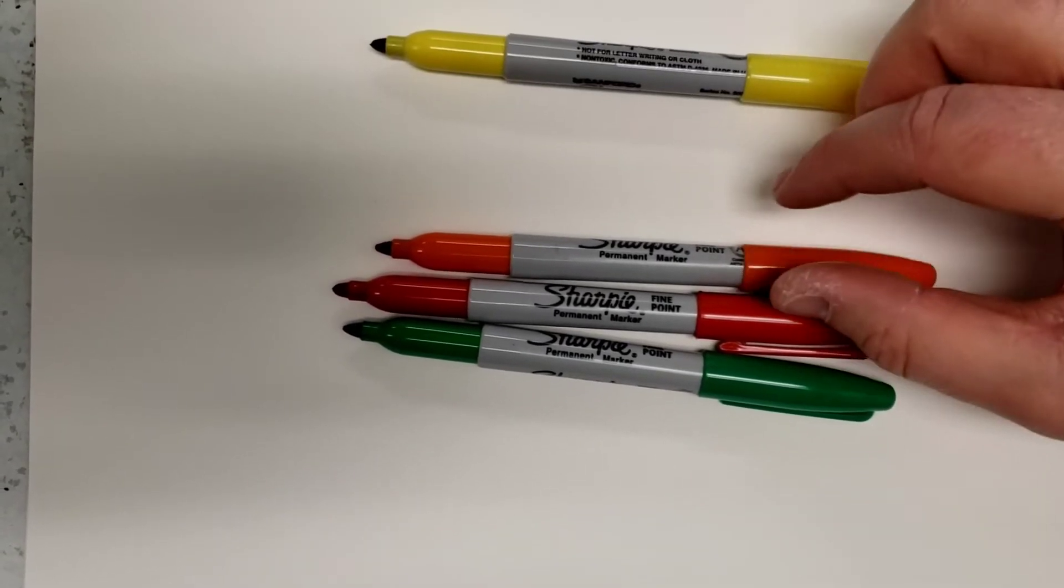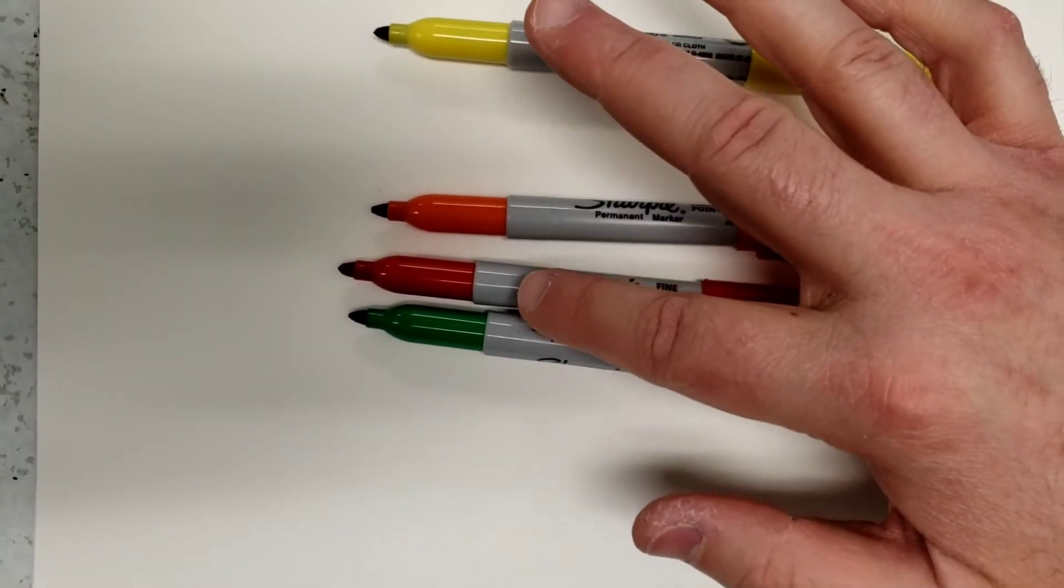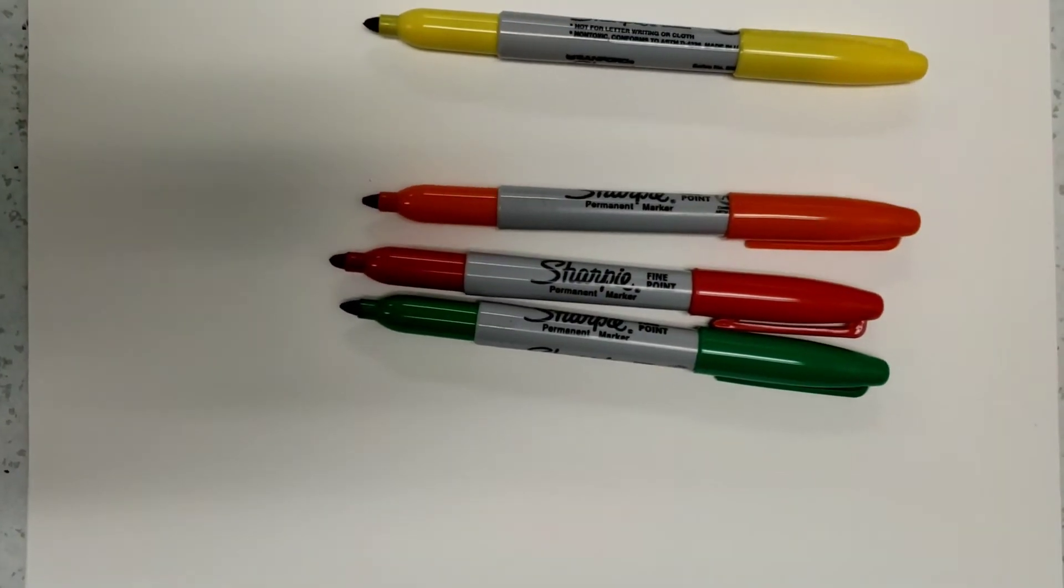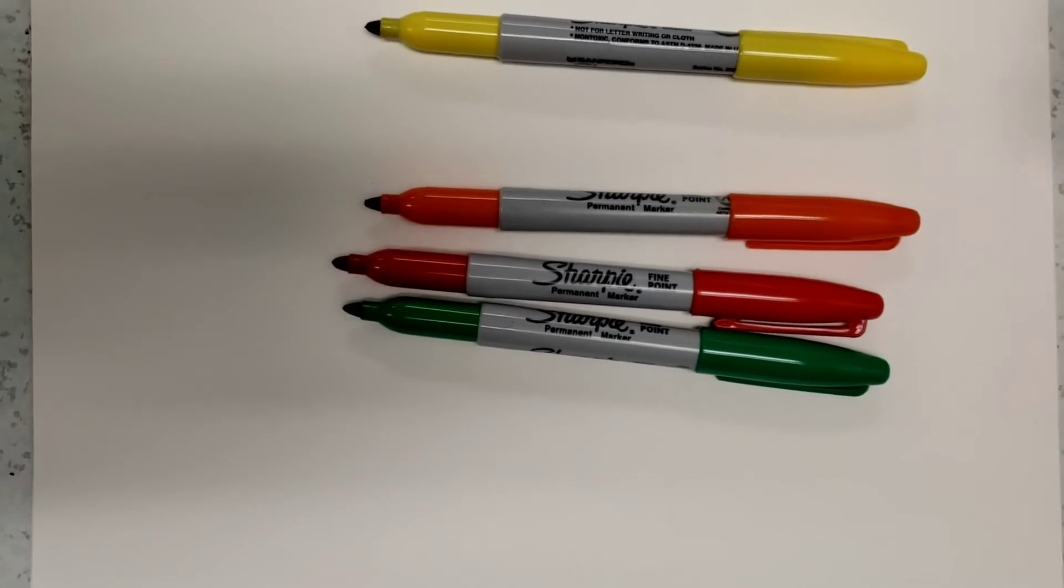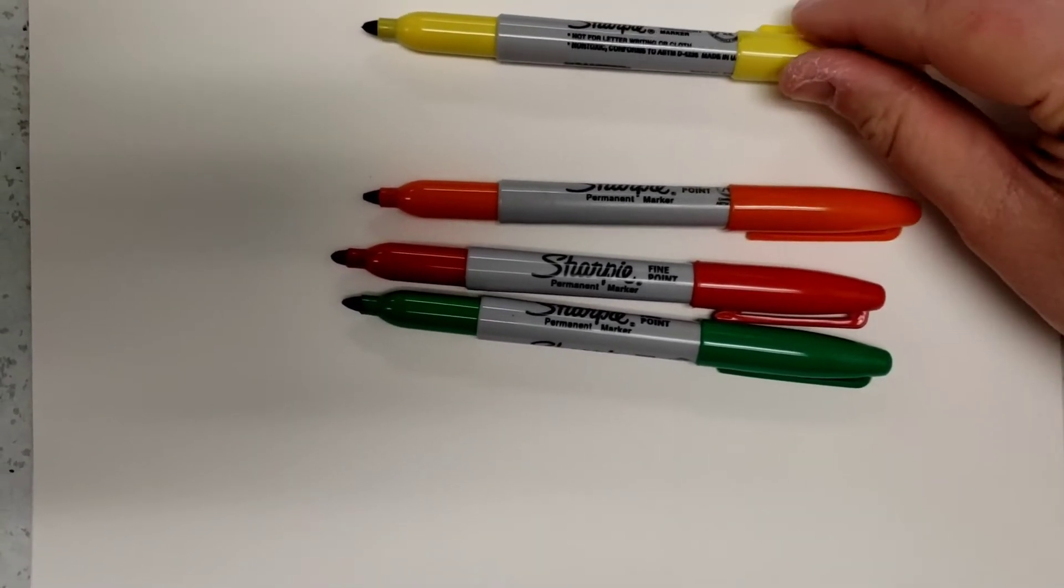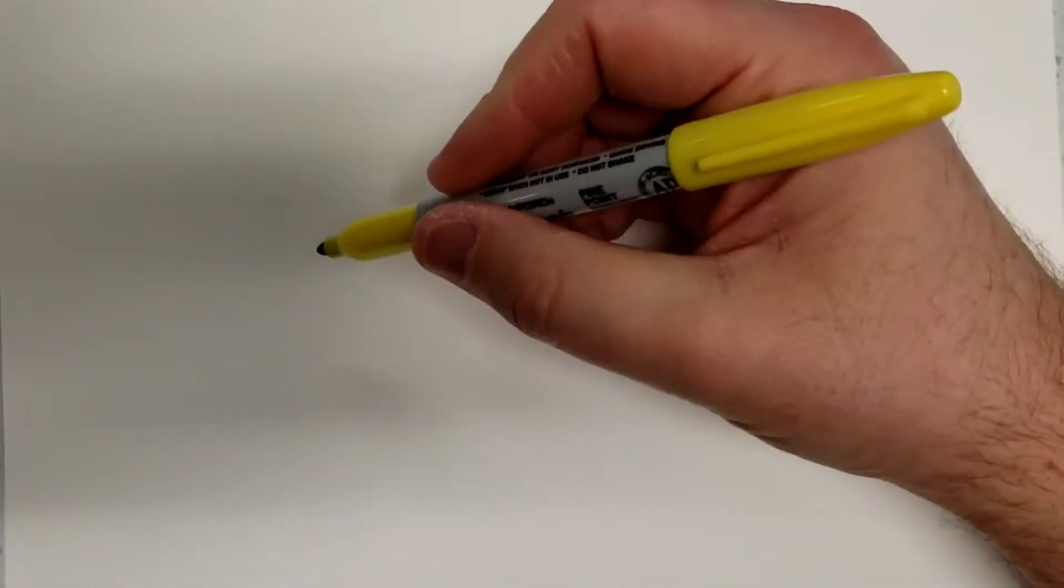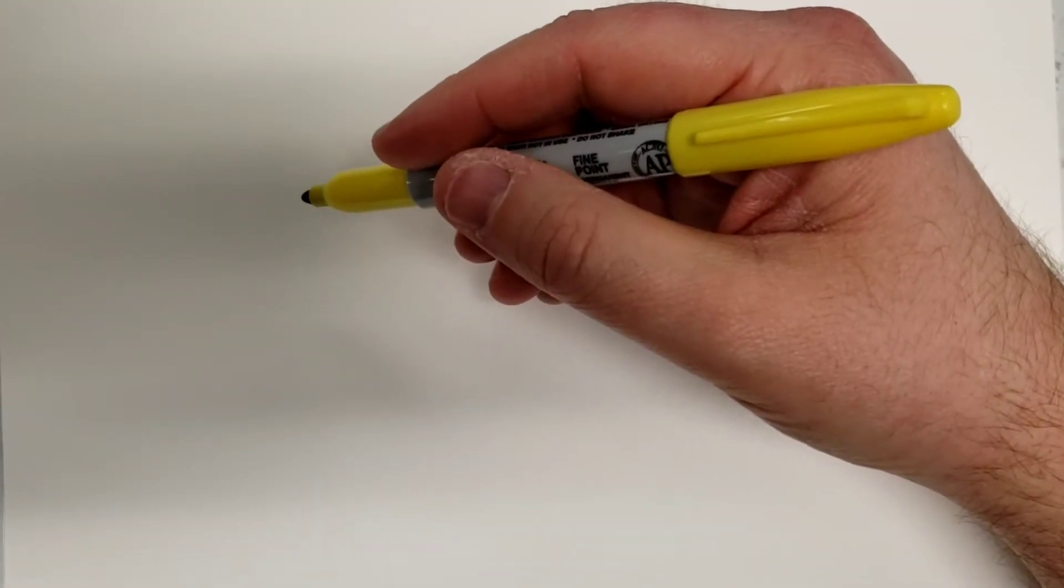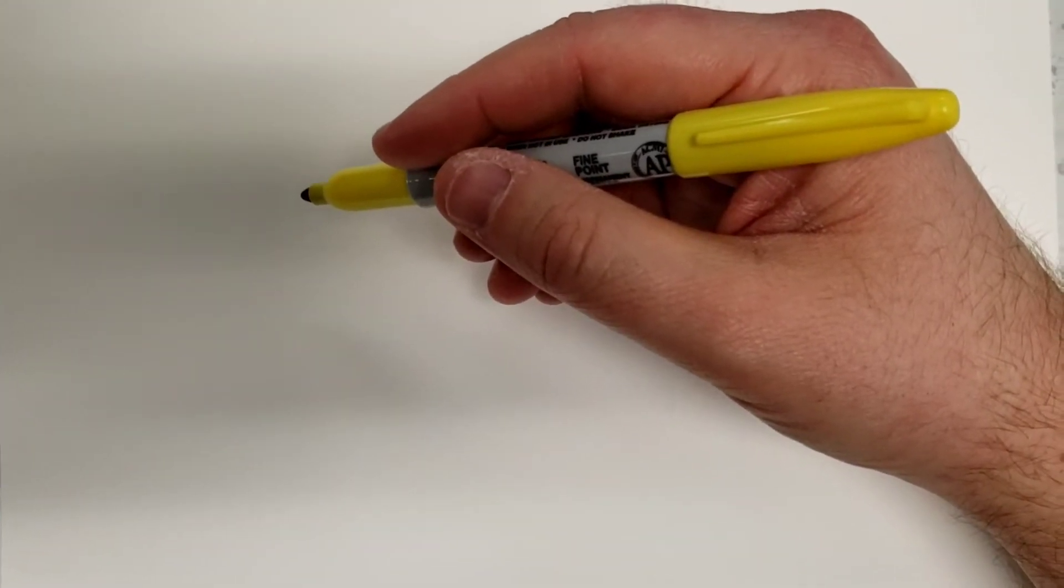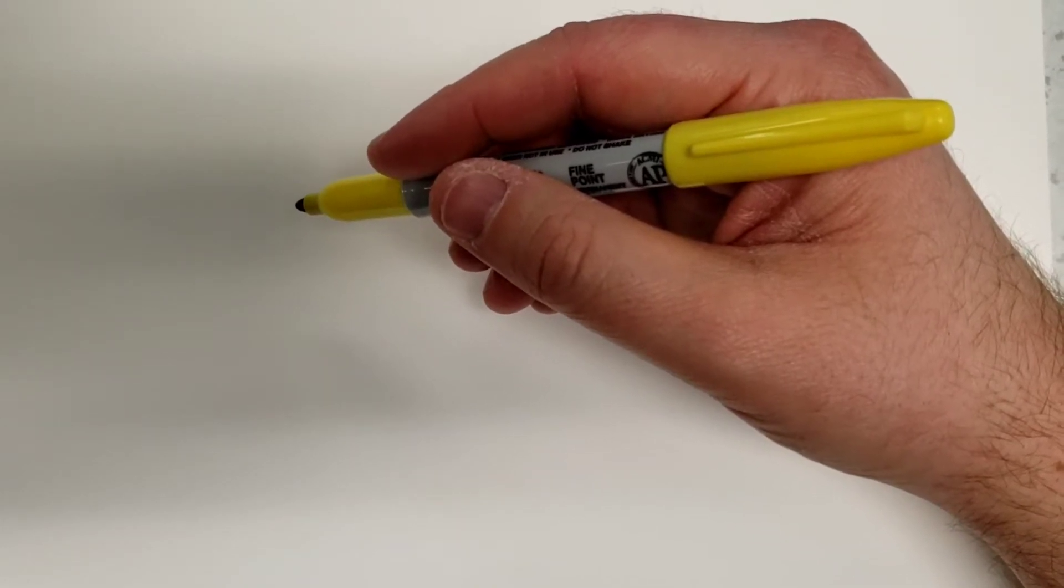You just need to get you a bunch of colors. You definitely need a yellow and then the other colors you can use are orange, red, and green. You can use blues, purples, pinks, whatever colors you want to do, but you definitely need a yellow. I'm going to use Sharpies, but you can use whatever you want—crayons, colored pencils, anything.